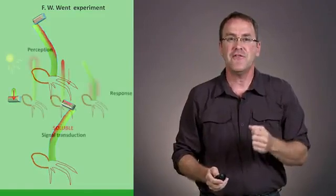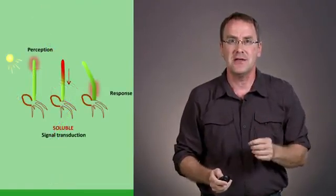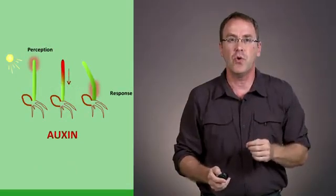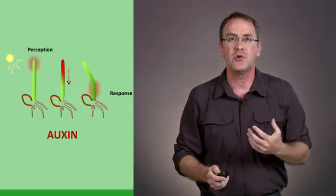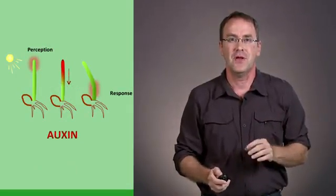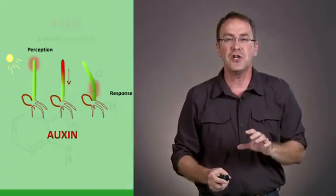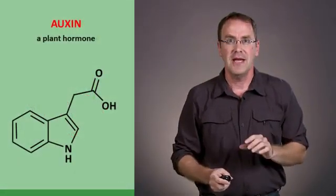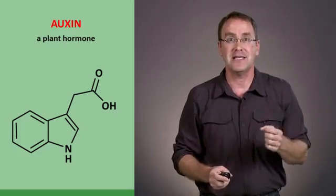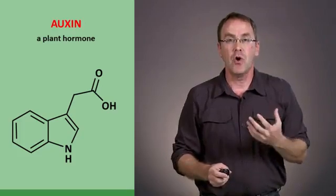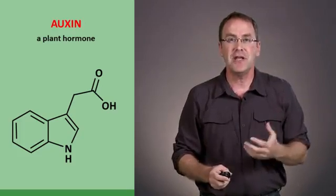He isolated from this agar a chemical which was then called auxin, which is taken from the Greek word to increase, in other words, to increase its length. So auxin is the first plant hormone, a phytohormone to be isolated, and one of the roles of auxin is to stimulate growth.